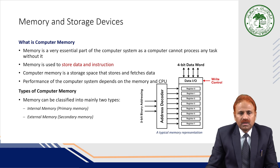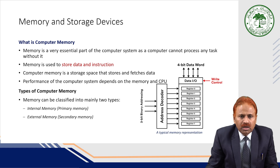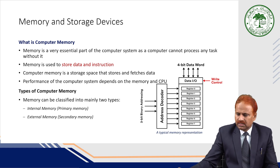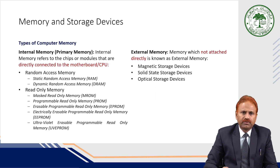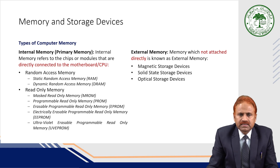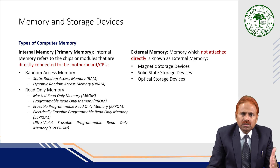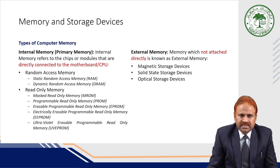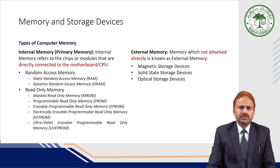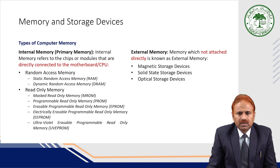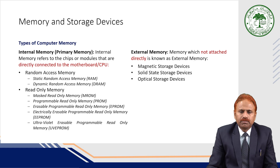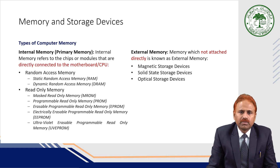Various types of memories exist. Memory may be internal memory, also known as primary memory, or external memory, also known as secondary memory. Internal memory refers to the chips or modules that are directly connected to the motherboard or CPU. RAM is an example of primary memory — SRAM and DRAM are examples of that. Read-only memory is also an example of internal memory: MROM, PROM, EPROM, EEPROM, and UV-EPROM are all examples of internal or primary memory.